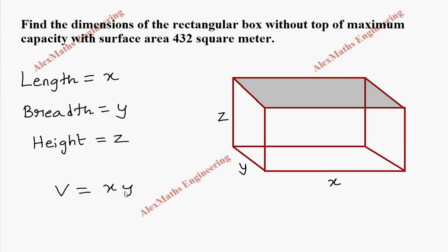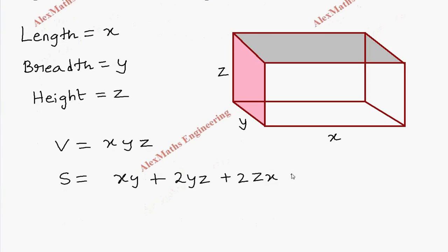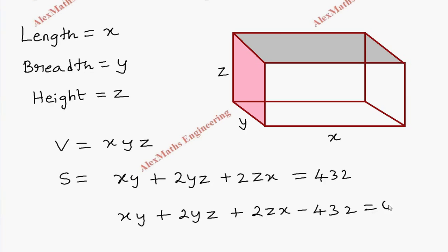The volume is xyz. For the surface area: there is a bottom rectangle which is xy. Since there is no top, we don't add another xy. The left and right sides each contribute yz, so together it is 2yz. The front and back sides each contribute zx, so together it is 2zx. Since it is open at the top, we have only one xy. This surface area equals 432, so the constraint is: xy + 2yz + 2zx − 432 = 0.